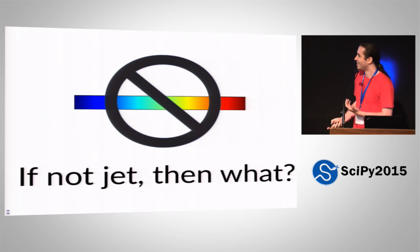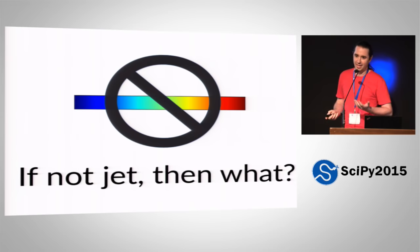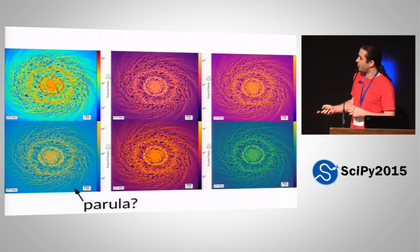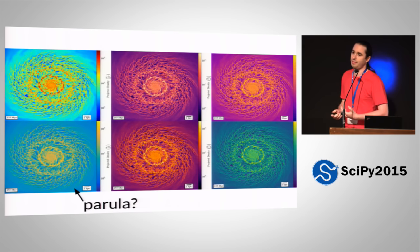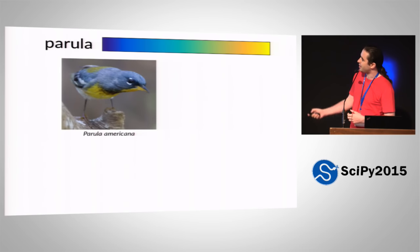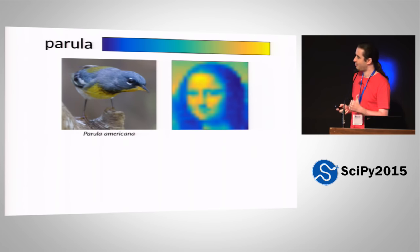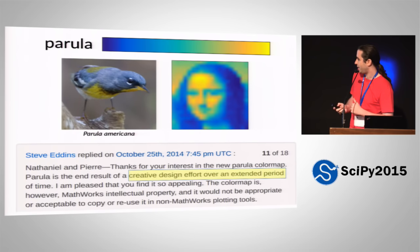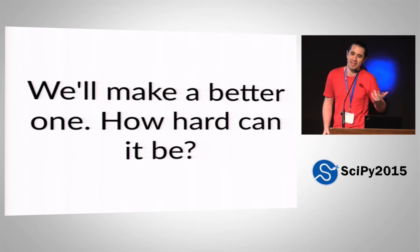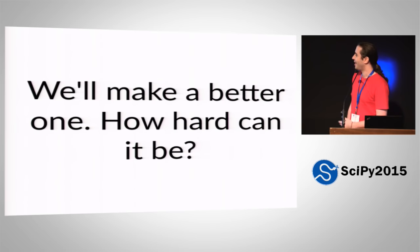Defaults matter. Not Jet — but then you have the problem of what to do instead. One obvious thing that might come to mind is a color map called Perula. Matplotlib, after inflicting Jet on us, finally switched to this one last year. It has a funny name — it's named after a bird, a scientific name. It's a lot better than Jet. However, we can't use it because they worked really hard on it, so you can't have it. So we have to make a better one. Fine, we'll do it ourselves. How hard can it be? Coincidentally, this slide also explains why it took me seven years to get my PhD.